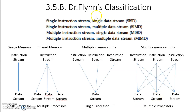Here we are going to look at Dr. M.J. Flynn's classification. He classified all computers into four categories: SISD, SIMD, MISD, and MIMD. SISD stands for Single Instruction stream, Single Data stream. SIMD stands for Single Instruction stream, Multiple Data stream. MISD stands for Multiple Instruction stream, Single Data stream. MIMD stands for Multiple Instruction stream, Multiple Data stream. The key terms here are instruction stream and data stream.